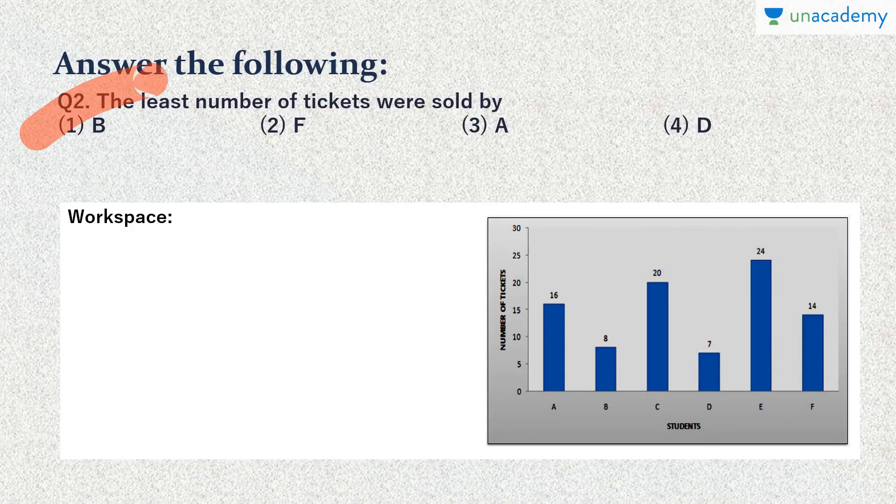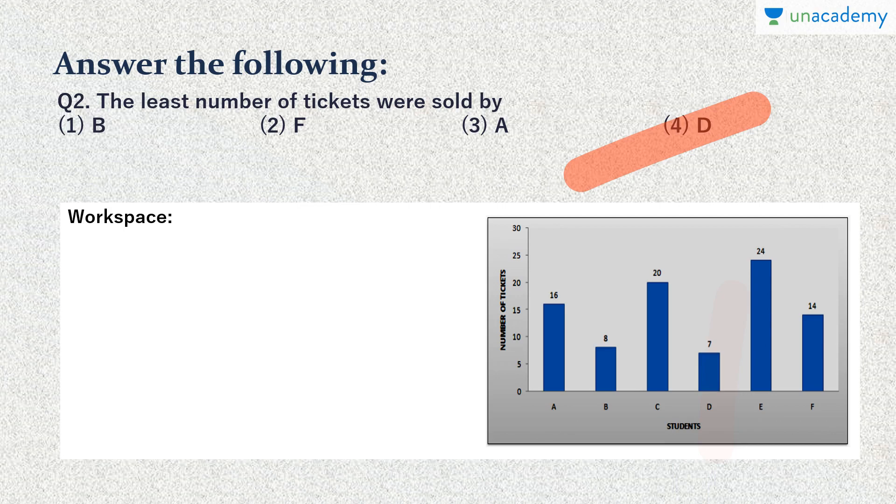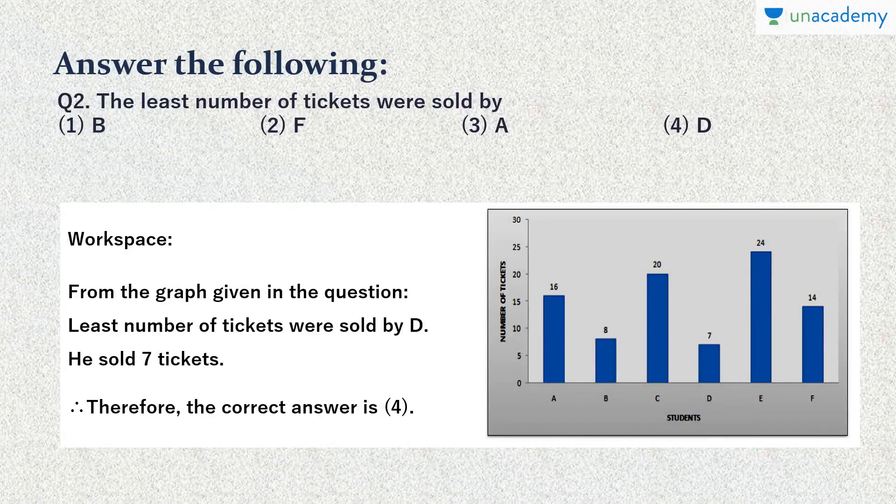Next question: The least number of tickets were sold by? Again, we look up to the graph and here we can see the least number is 7, which belongs to D. So D was the student who sold only 7 tickets, which is the least number. Our answer is option 4, option D.